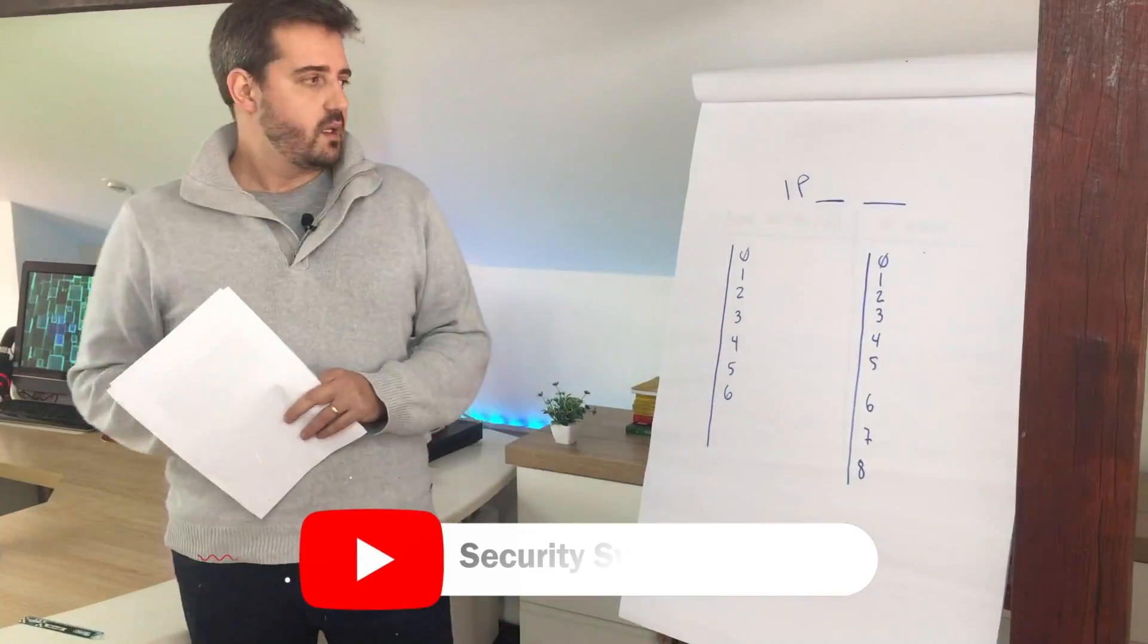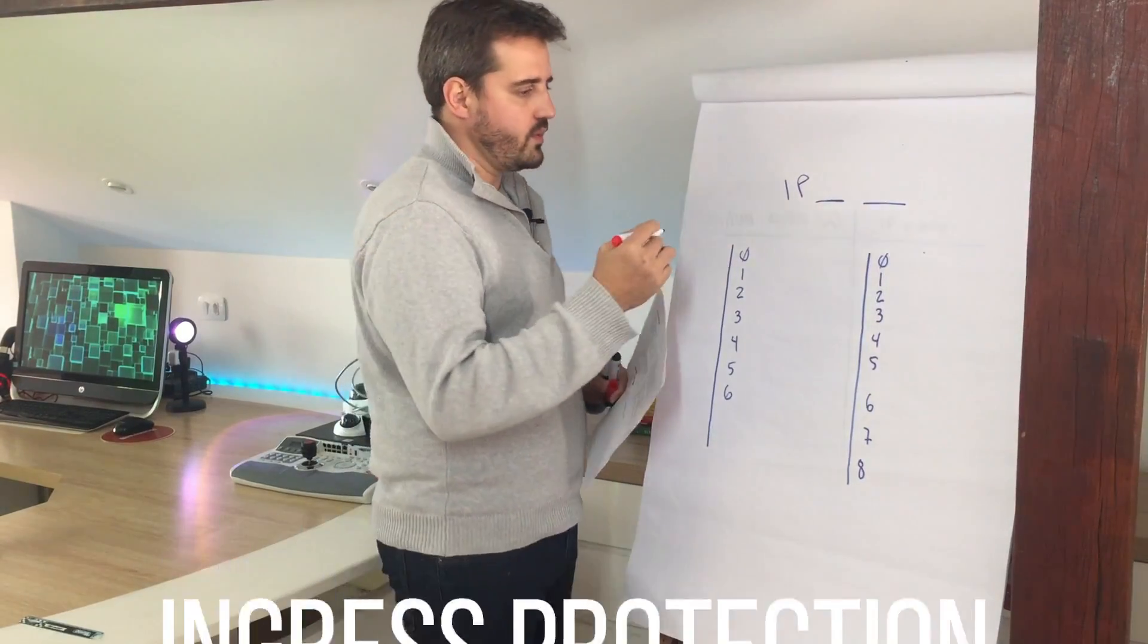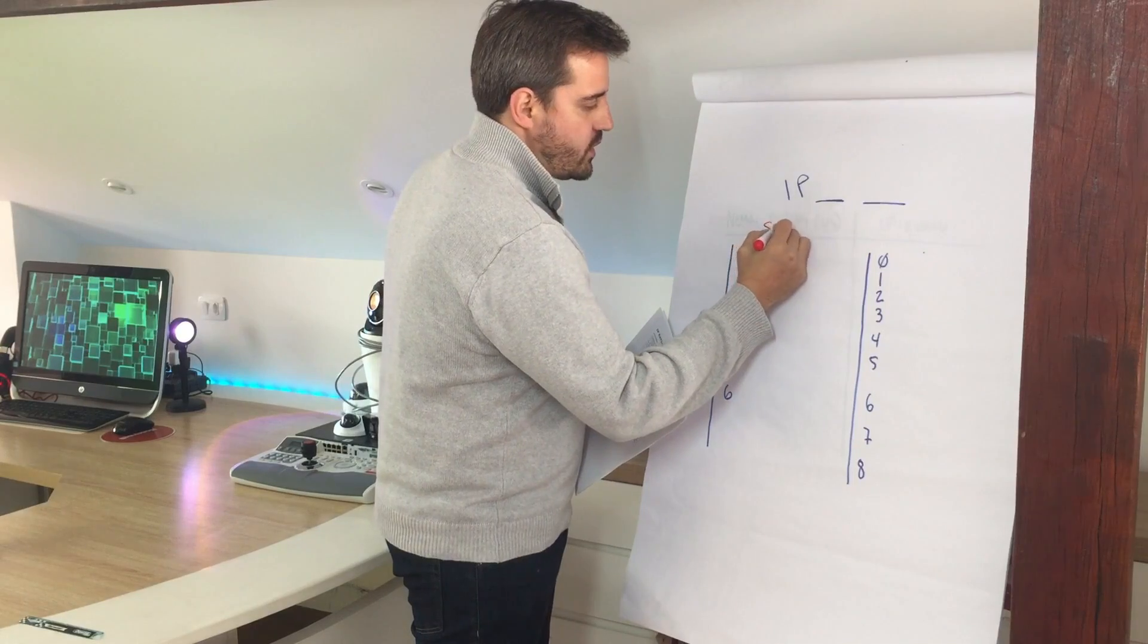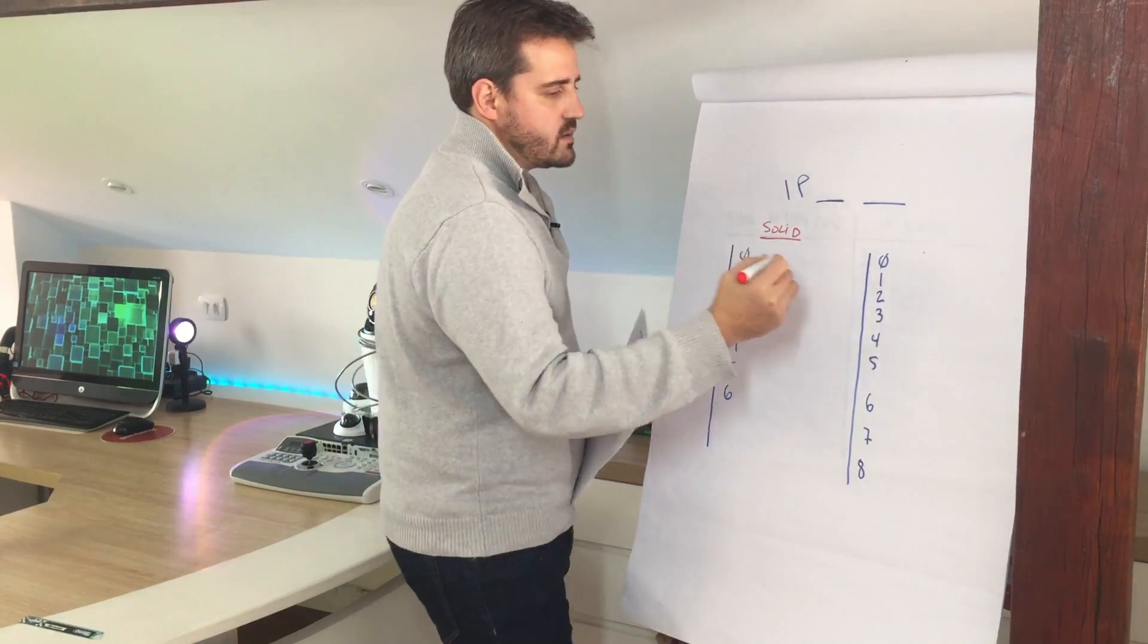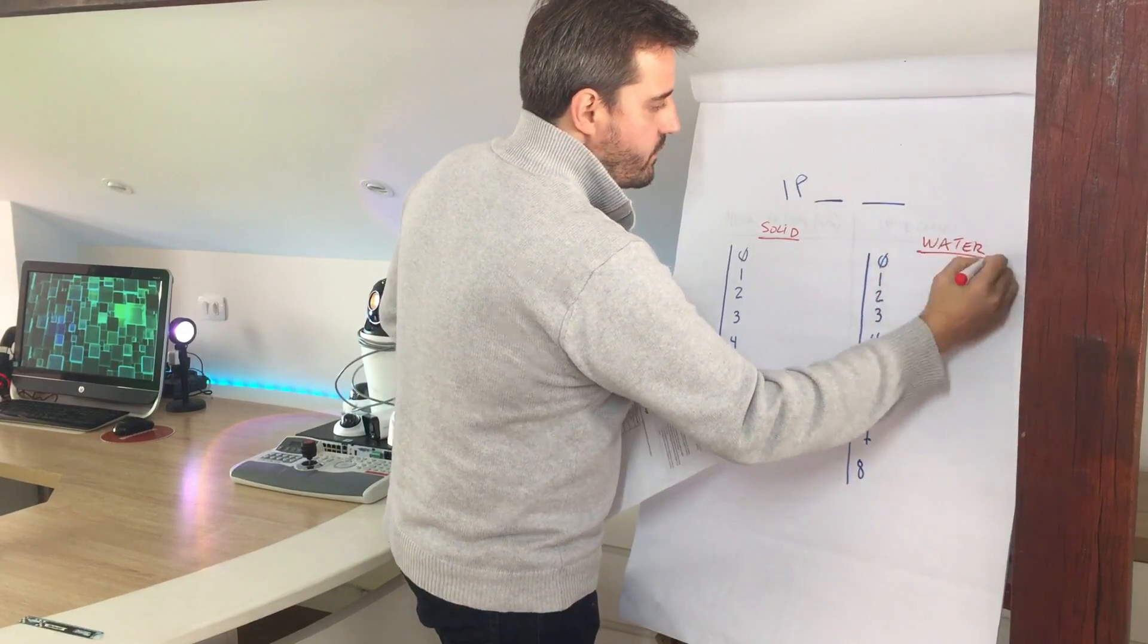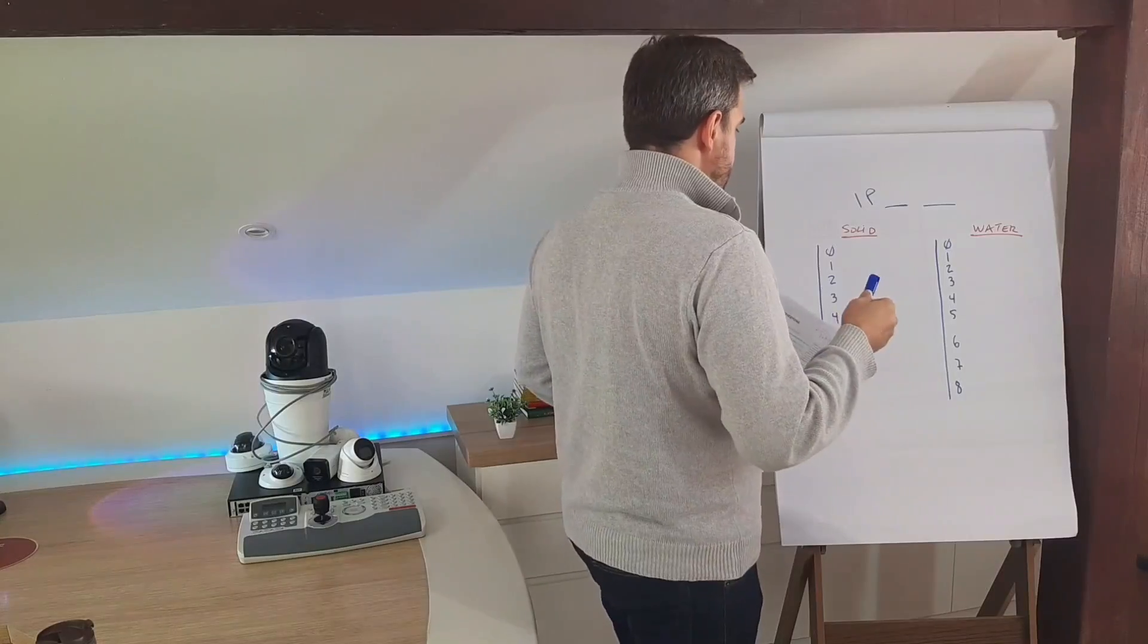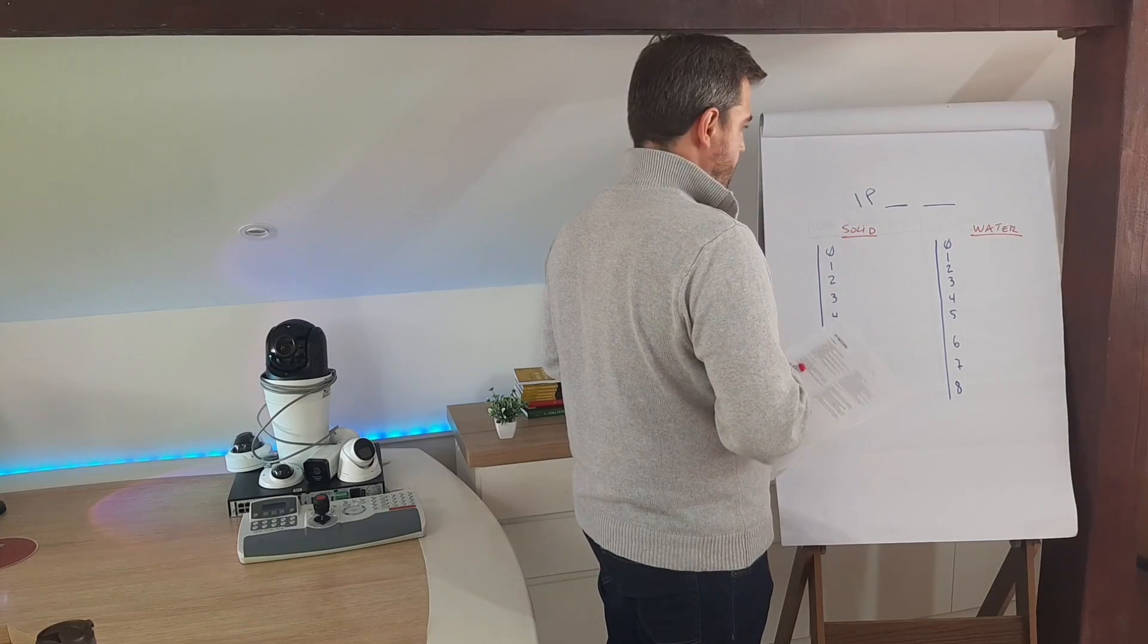IP rating is an ingress protection that basically will cover two situations. The first one is solid and the second one is related to water, so let's understand what these numbers means on this classification.